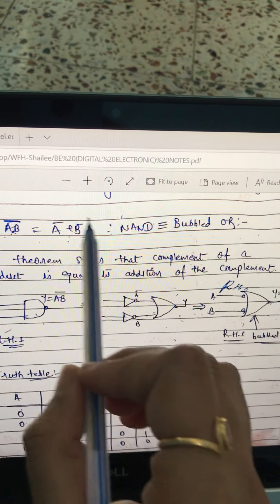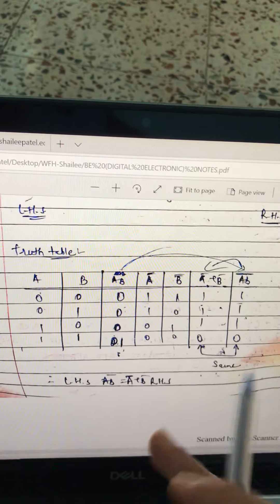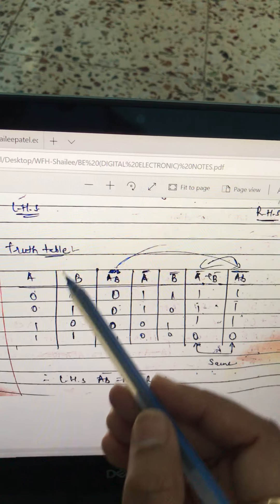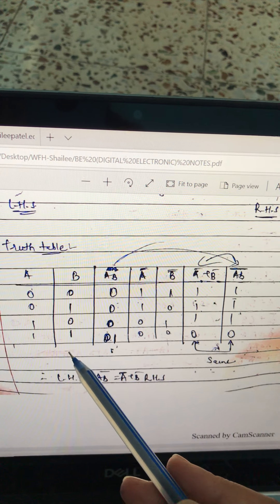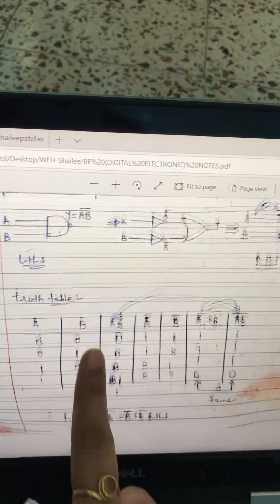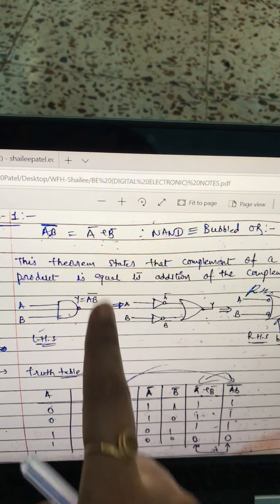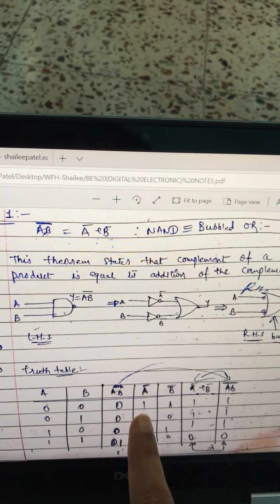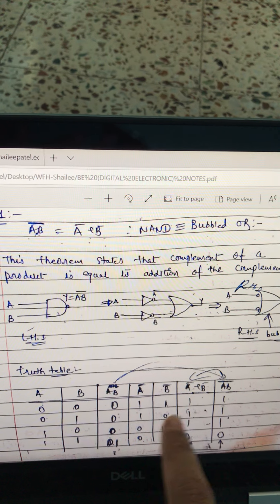So this is representation of bubbled OR gate. Let's go for the truth table. We having two inputs, so we have possibly four combinations of the input. See we need this and this have to equal. So you need to make a bar of this in a truth table. Then you need a dot product of it. And you need to make invert of it.